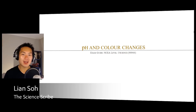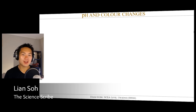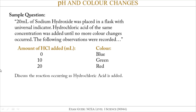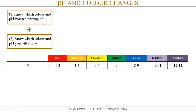NCA level one exam revision guide for pH and color changes. The type of question we're going to look at in this video is a neutralization reaction in the presence of an indicator — usually universal indicator. In the question, they may give you hints and clues about the color changes that occur. For example, in this question you've got 20 mils of sodium hydroxide in a flask with some universal indicator, and they want to add hydrochloric acid until no more color changes occur. At zero mils of acid added the color is blue, after adding more acid the color turns green, and after adding more it turns red. The question is to discuss the reaction occurring as hydrochloric acid is added.